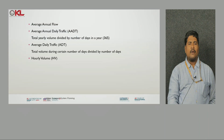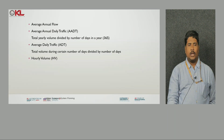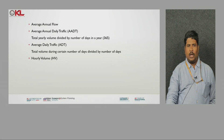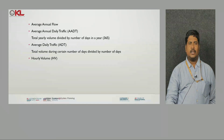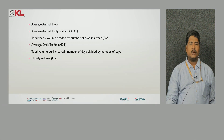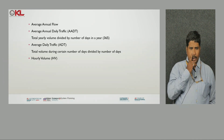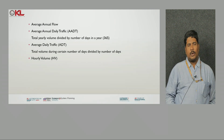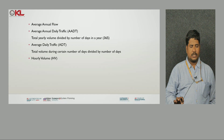Next, average daily traffic — it is per day how many vehicles are coming. For example, if we conducted a 7-day survey, the total will be divided by 7, so on average daily how many vehicles are coming will be identified. And hourly volume — for each hour how many vehicles are moving — that will be identified as the hourly volume.